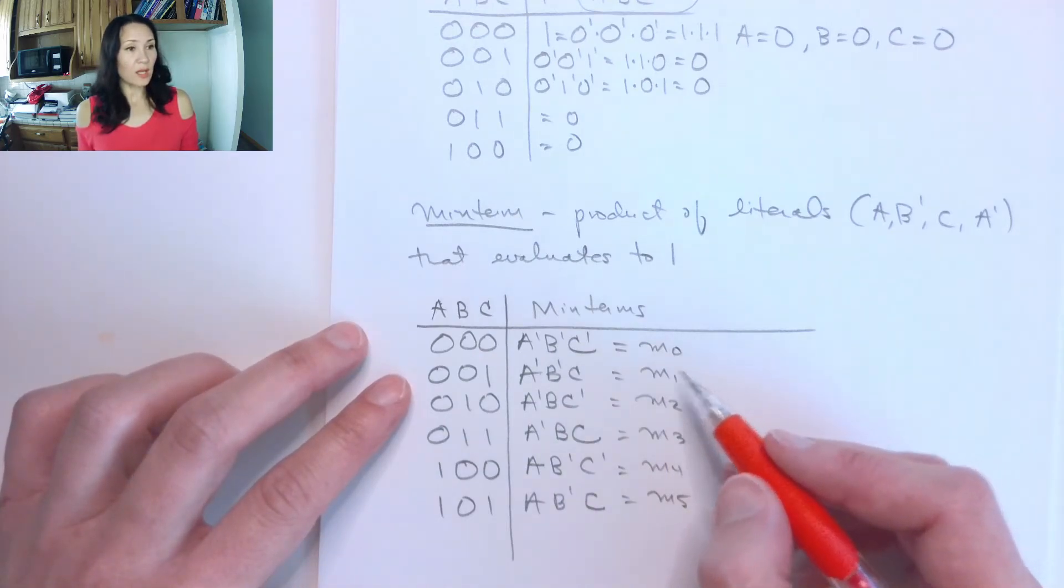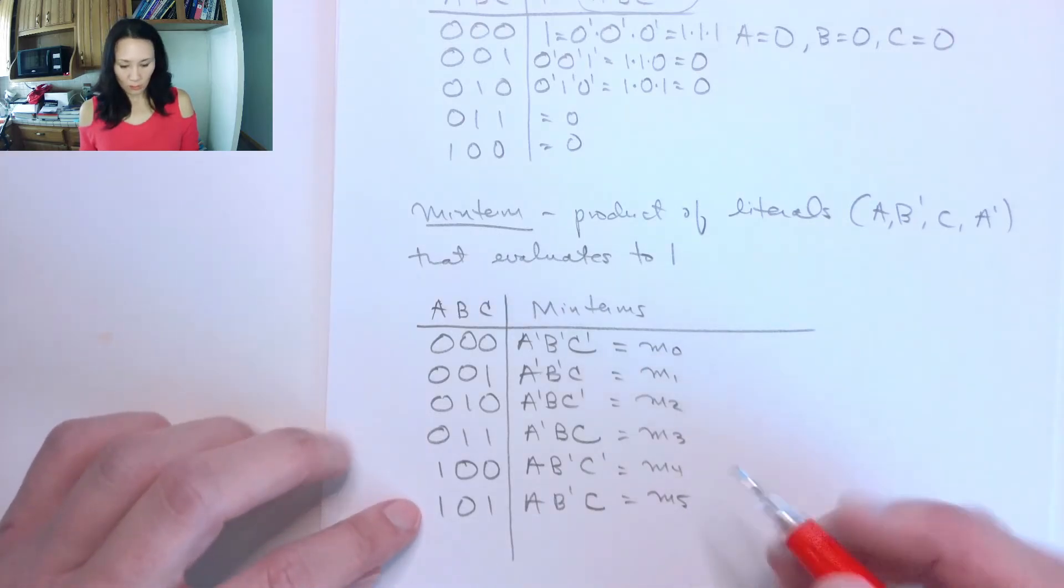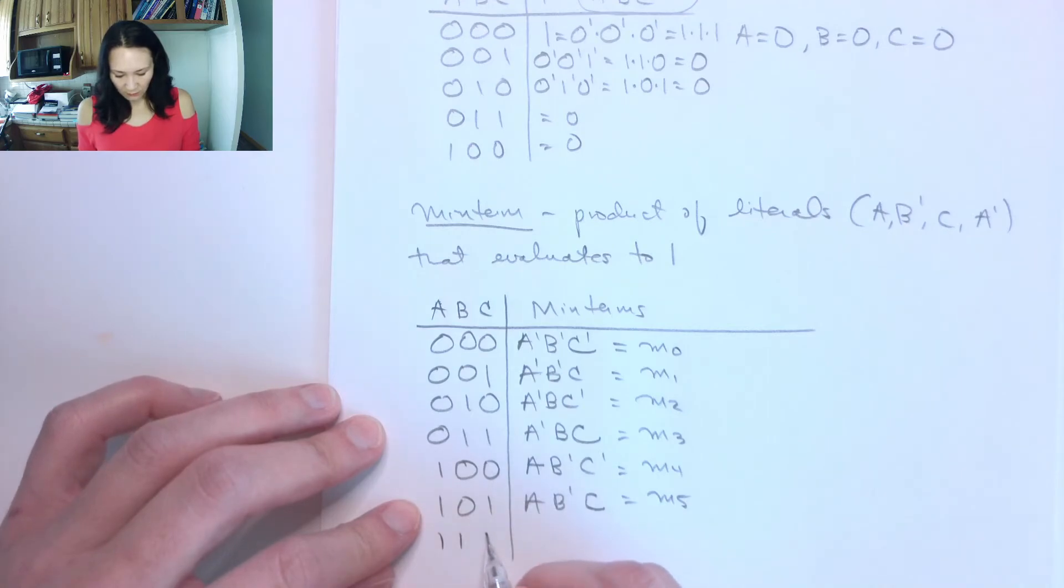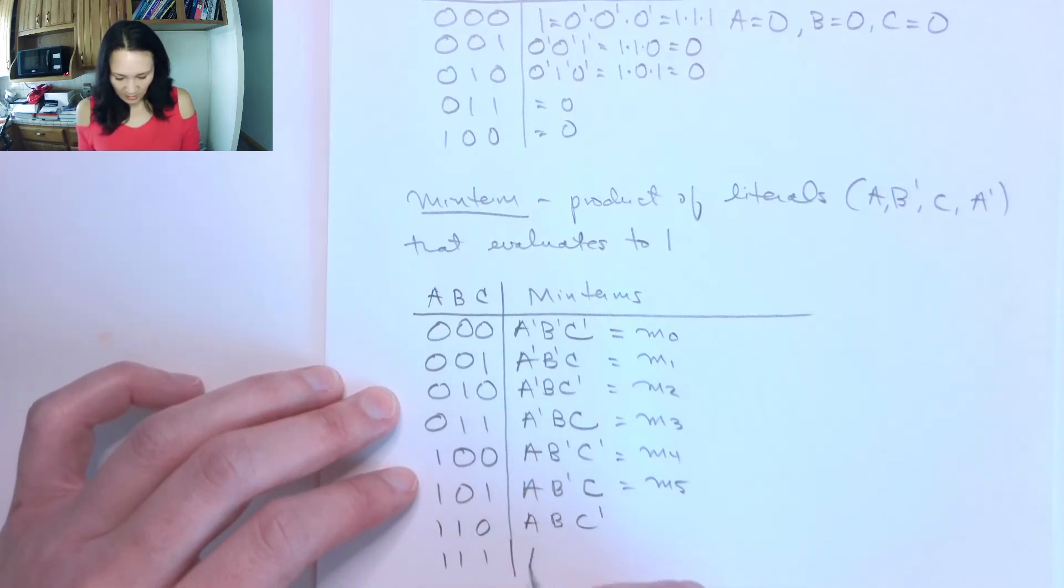Now this notation is, this should be a lowercase m with a subscript starting at 0, and for this case it's going to go to 7 because we're going to have 7 input combination cases. So we can go ahead and finish this. A, B, this would be C naught, and this would just be A, B, and C. And this is minterm 6, and this is minterm 7.